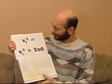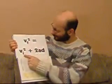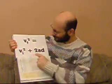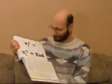Oh, VF squared, you're VI squared plus 2AD, and I'll use you when I'm not given T.